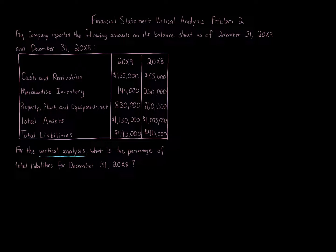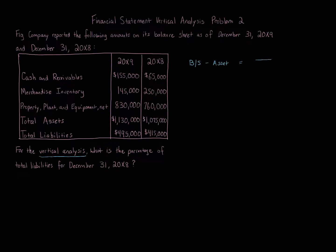Vertical analysis is the percentage analysis of the relationship of each component in a financial statement to a total within the statement. Depending on the kind of statement you're looking at — balance sheet versus income statement — and the specific item, that determines your denominator. For balance sheet assets, the formula is the asset item over total assets, and you stay within the same year.